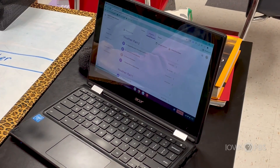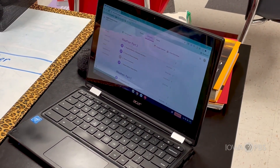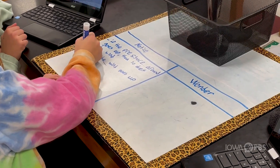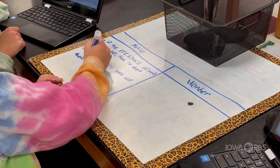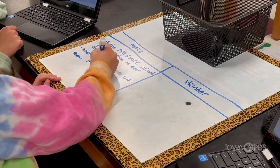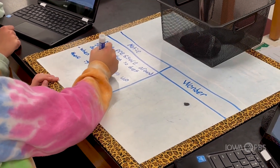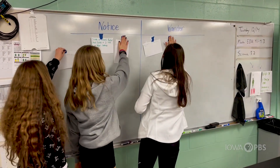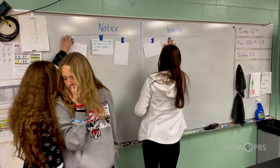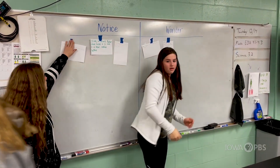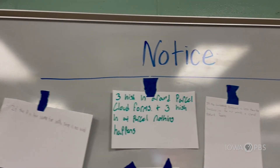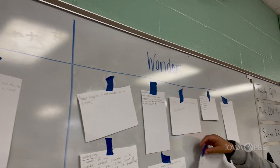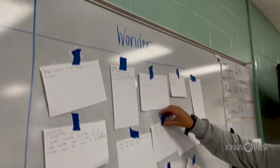Today they're looking at data they collected from a simulator. We're going to do some analysis of it — what they notice about the data, what they're wondering about the data, and how it helps explain how a rain cloud would be formed and what's the potential that that cloud will rain.